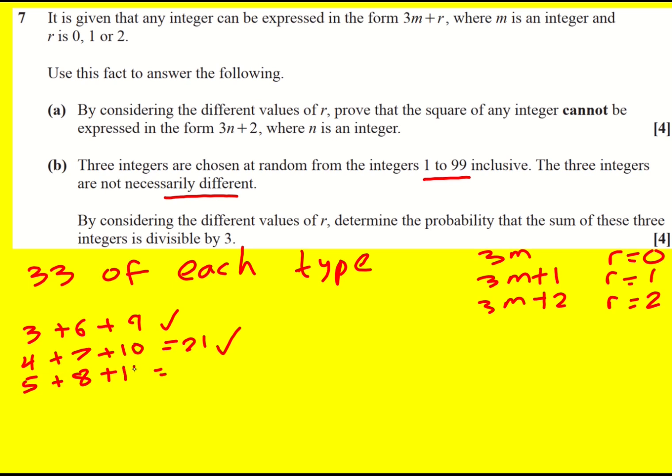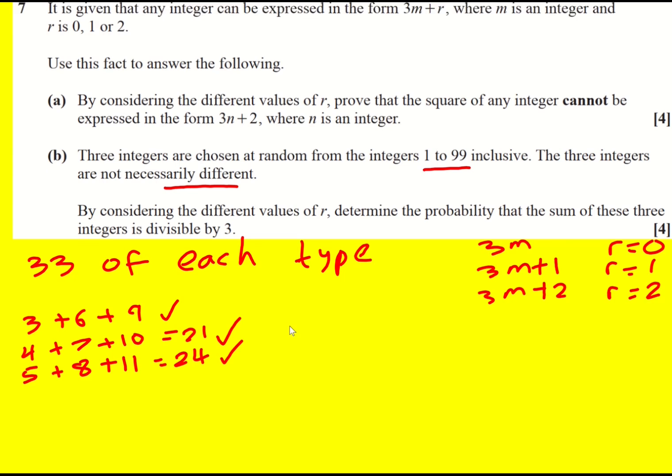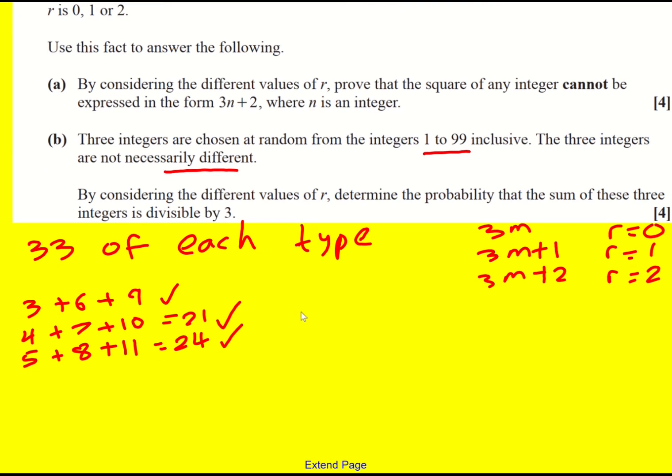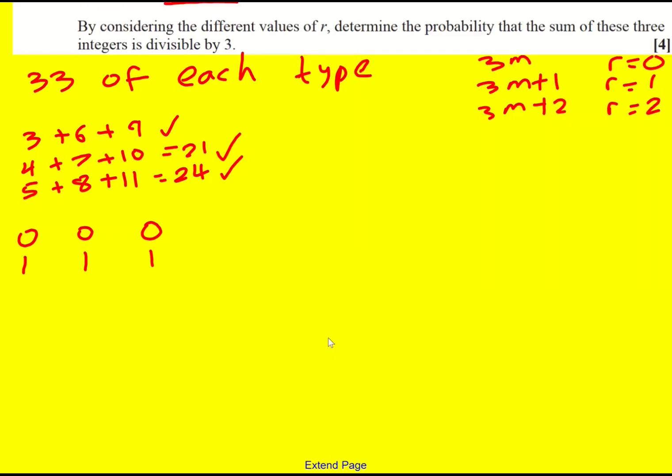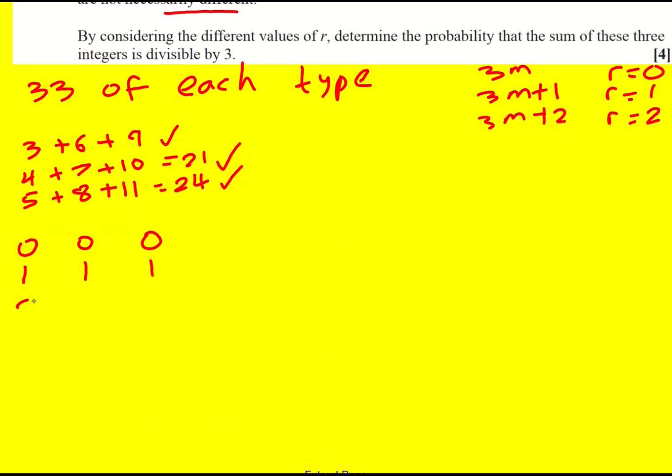That should have been 2 more than a multiple of 3. So it was 3, 6, and it should have been 11 here. And that would have given 24. Okay, so just get this extra 3. So you can see the different situations where we can get a sum that's a multiple of 3. So basically, if we go with 0, 0, 0 as our r, that would work. If we go with 1, 1, 1. So each number is one more than a multiple of 3, that would work. And the 2, 2, 2 would as well.